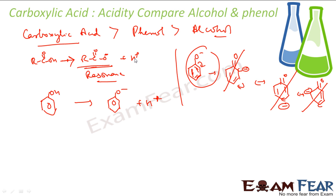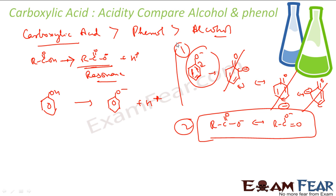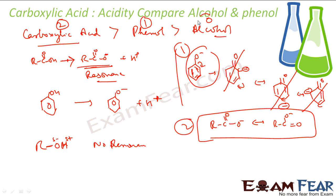So RCOO⁻ has two resonating structures; phenol's O⁻ has one valid resonating structure; and alcohol has no resonance at all. Therefore, carboxylic acid is more acidic than phenol, and phenol is more acidic than alcohol.